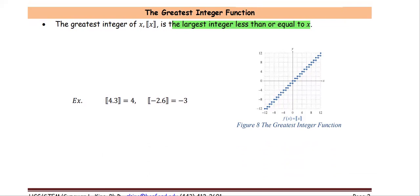For example, the greatest integer function of 4.3: 4.3 is between the numbers 4 and 5, so we take the one that is less than or equal to x, which is 4. Similarly, for negative 2.6, which is between negative 3 and negative 2, the lower one is negative 3. Therefore, the greatest integer function of negative 2.6 is negative 3. The graph looks like steps, so sometimes we call it the step function.